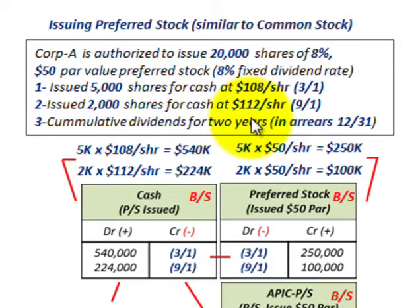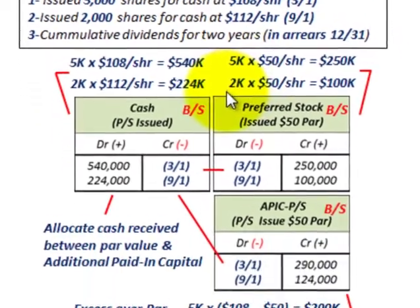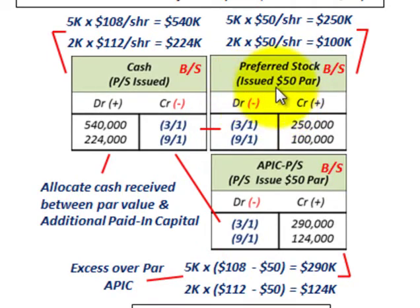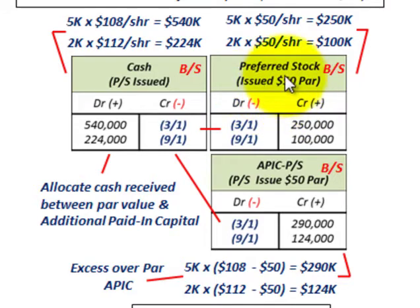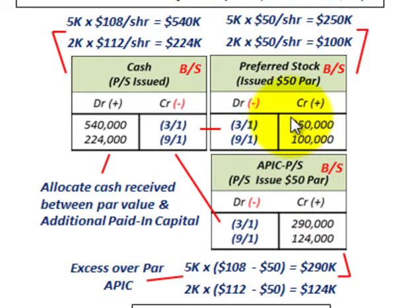We're also going to look at a cumulative dividend that is two years in arrears and has to be paid on this preferred stock. We'll look at the year-end entry. With preferred stock, we have to set up a separate equity account on the balance sheet — separate from common stock or treasury stock — for preferred stock at its par value, and then an additional paid-in capital account for any amounts received above par value.